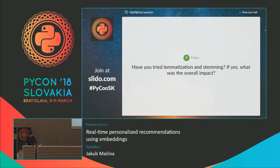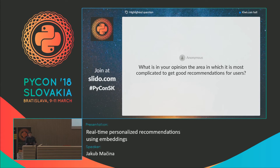What area is the most complicated to get good recommendations for users? Each domain is different, but our problem at Exponia is particularly challenging because our clients span different domains, and you need to be good across all of them without tuning specifically for each. Building a more general recommender system that works as a service across domains is very challenging.